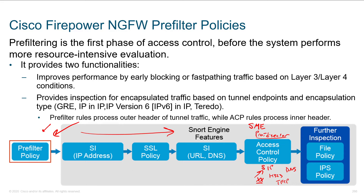The idea is to throw things away as early as possible using the simplest method, because the advanced inspection methods not only require more resources, but there's more that could go wrong since they're performing more complicated functions and may not have been tested as thoroughly. This improves performance through early blocking, or if we're not blocking, we can fast-path traffic based on layer 3 and layer 4 criteria.